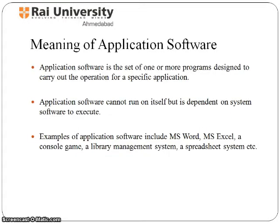Here we begin with what application software means. An application is a program or a group of programs that is designed for the end user. Application software can be divided into two general classes: system software and application software. Application software, also called end user programs, includes such things as database programs, word processors, web browsers, and spreadsheets.